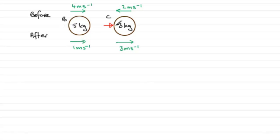And I'm going to label my impulse that C receives as I. It receives a bang on the right here. And B receives an equal and opposite impulse in the other direction. So they hit one another and they both receive impulses equal and opposite in the directions that I've shown.